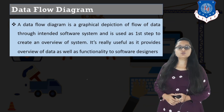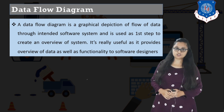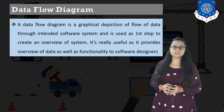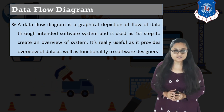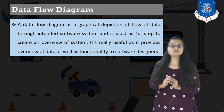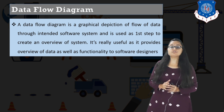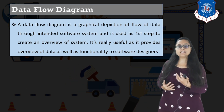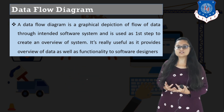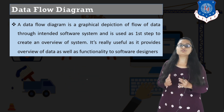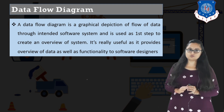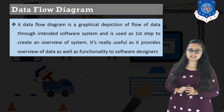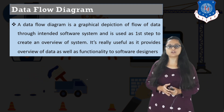Data flow diagram is a graphical depiction of flow of data through an intended software system. It is used as the first step to create an overview of the system. It is very useful as it provides an overview of data as well as the functionality to software designers.